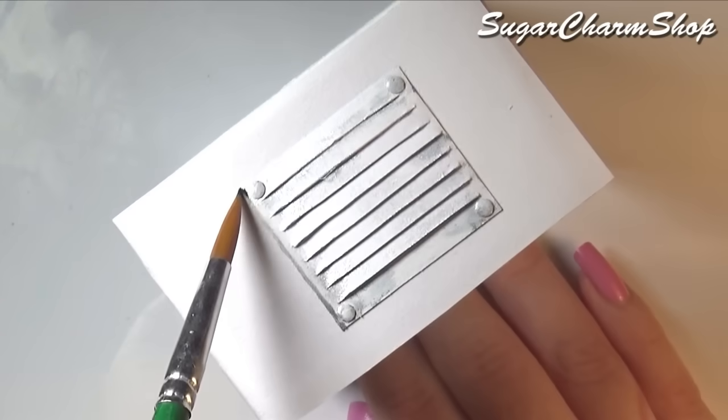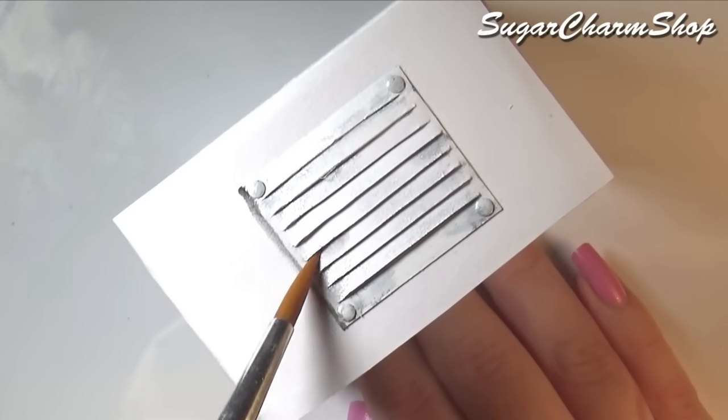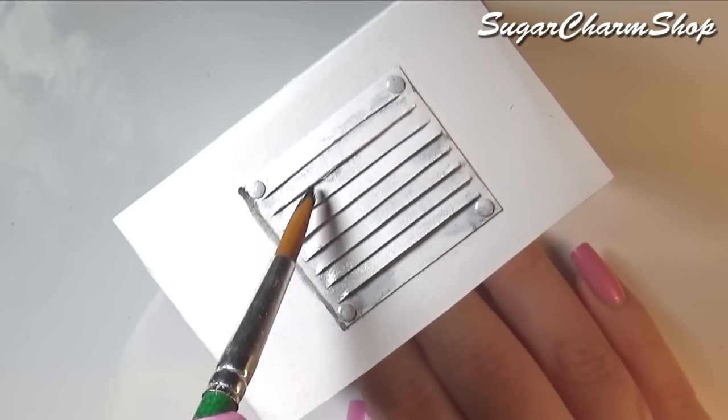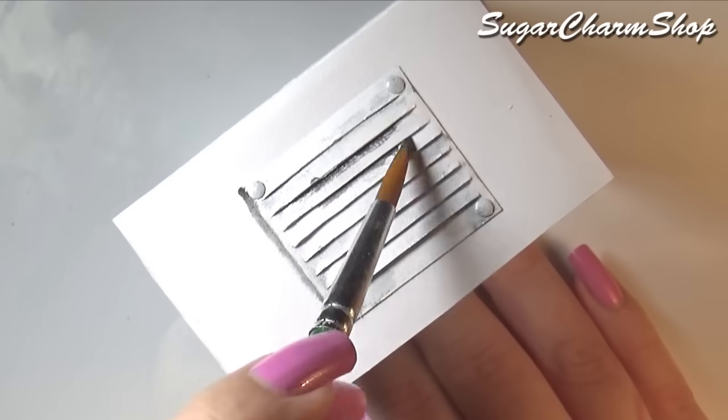I then added a small amount of black watercolour to the entire box, just around the edges. And if you don't have watercolours, you can also use some watered down acrylic paint.